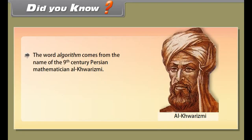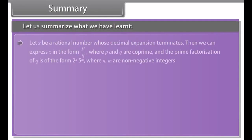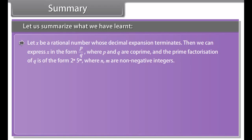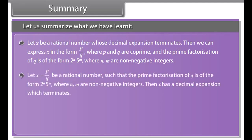Let us solve an example. Without actually performing the long division, state whether the following rational number will have a terminating or non-terminating repeating decimal expansion. 13 upon 3125: we can write this as 13 upon 5 raised to the power 5. Here Q is 5 raised to the power 5, which is of the form 2 raised to the power N × 5 raised to the power M, with N equal to 0 and M equal to 5. So the rational number 13 upon 3125 has a terminating decimal expansion.